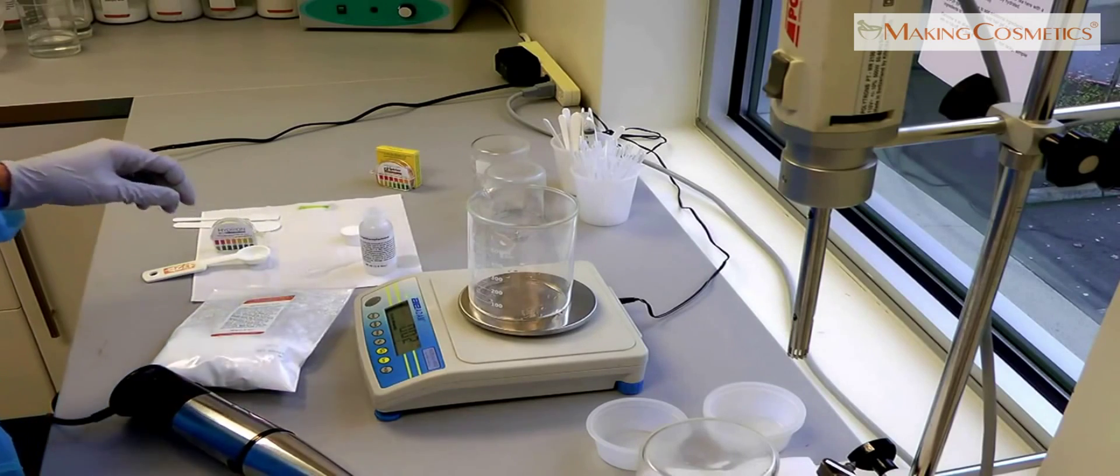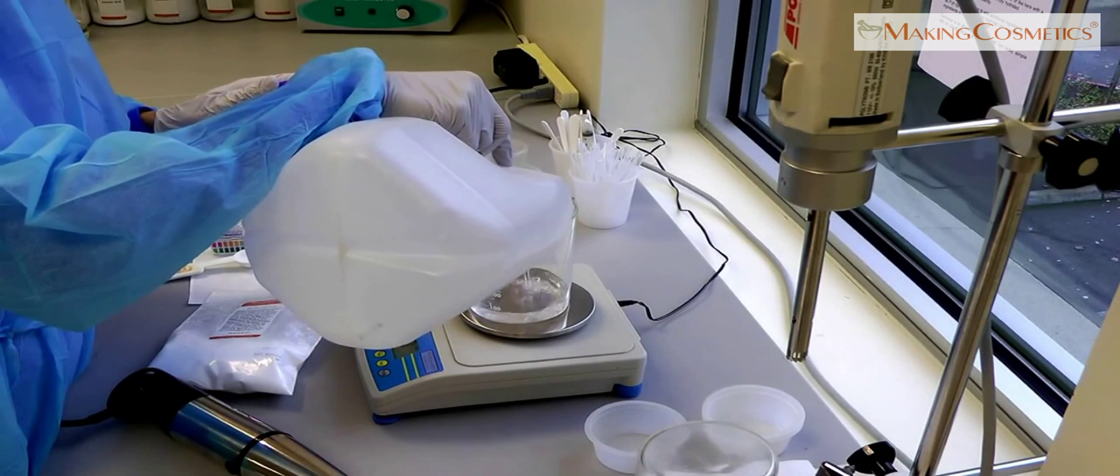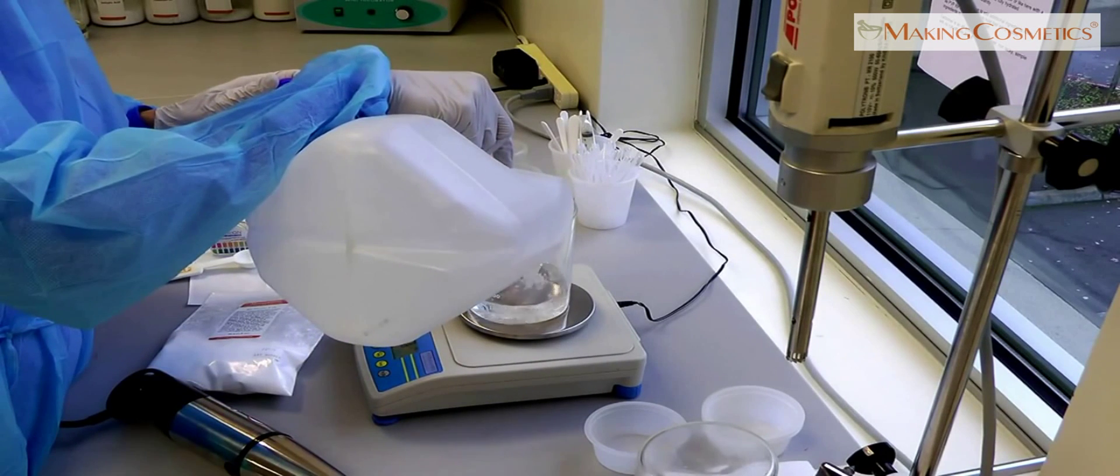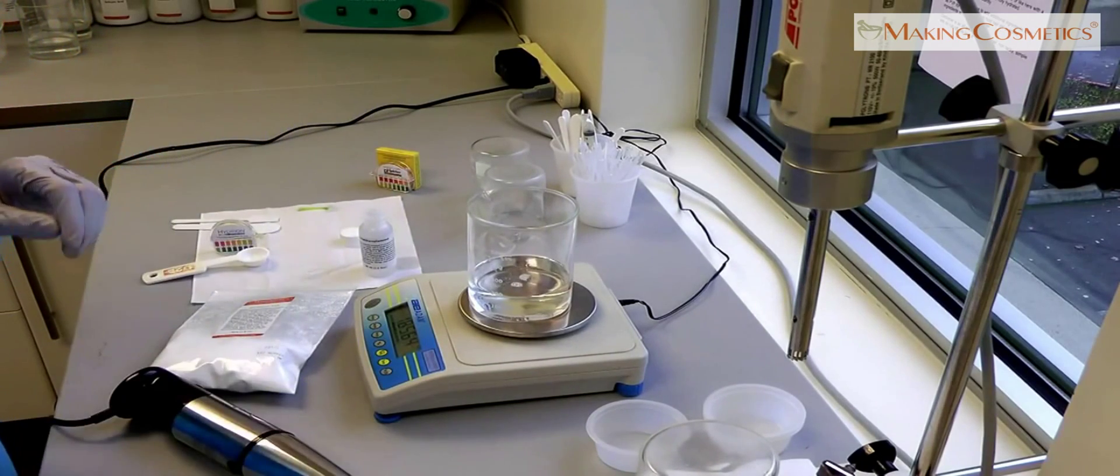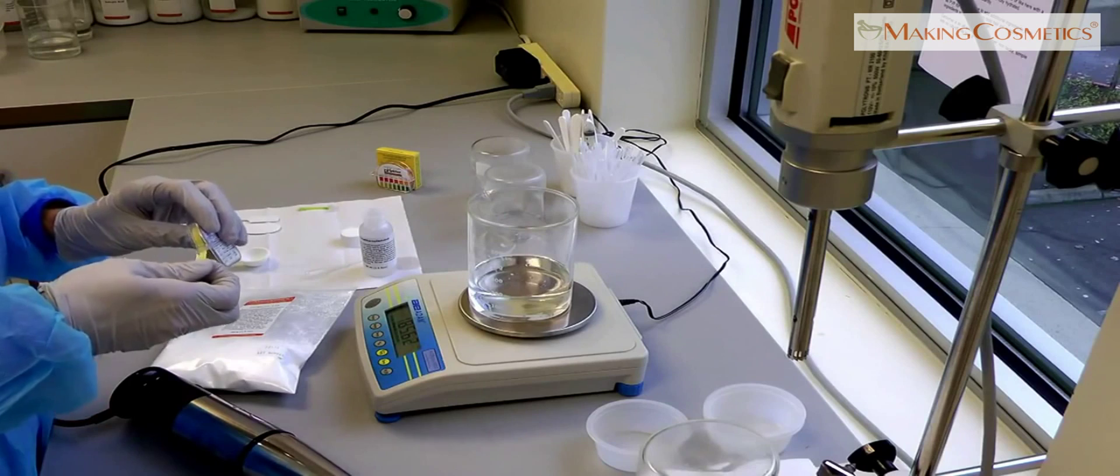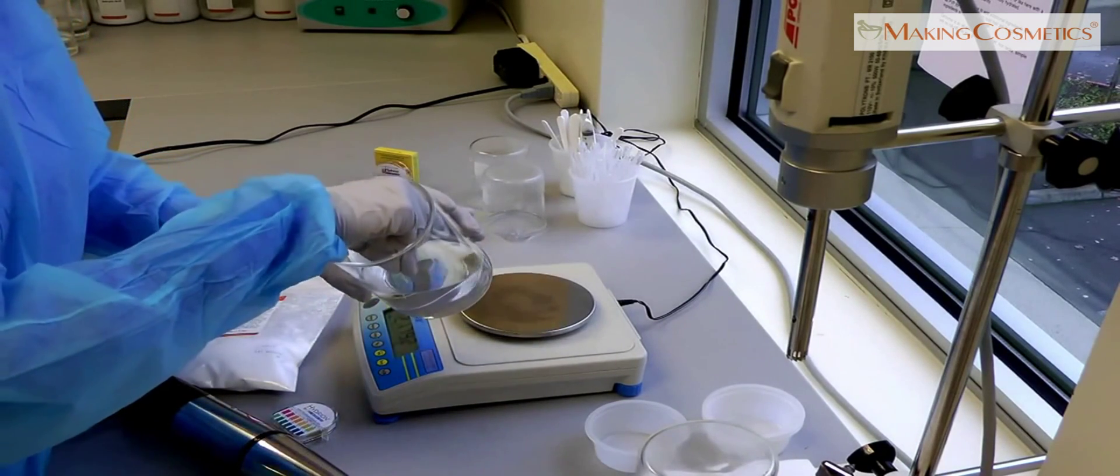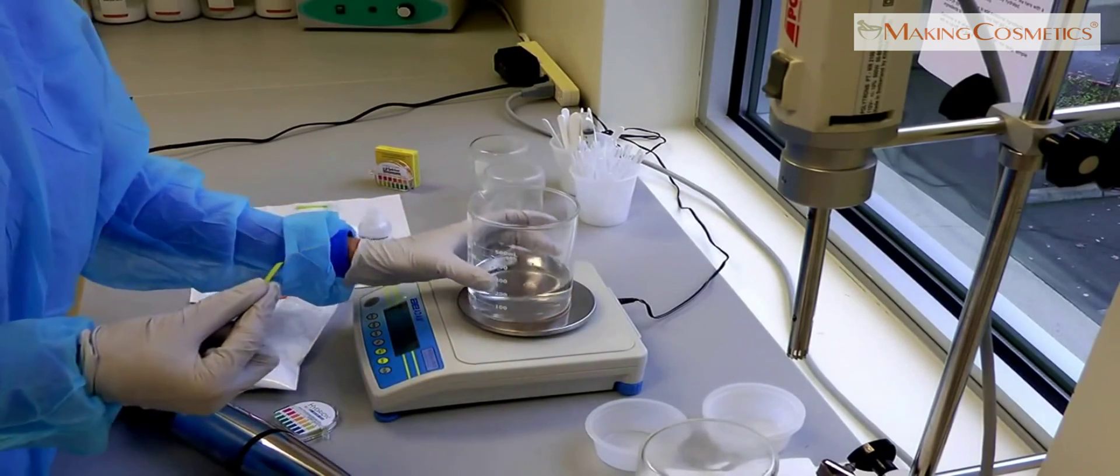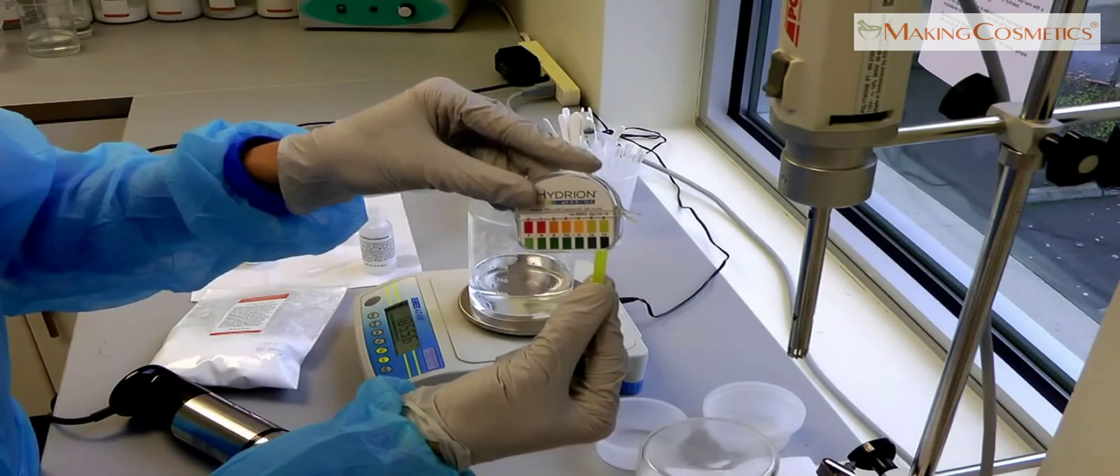We are adding distilled water to a beaker glass. We will test the water for its pH. In our case, the water has a pH of 6.